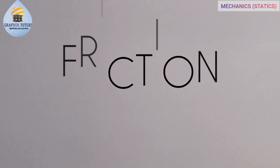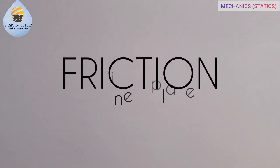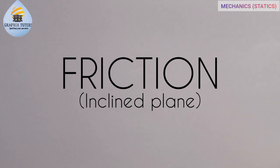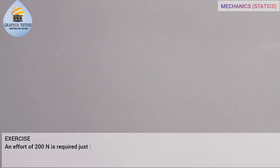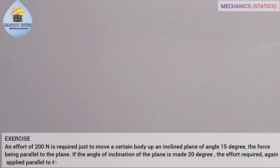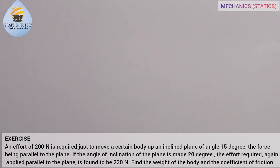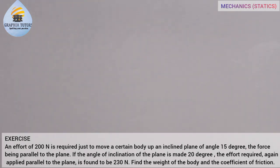Hello everyone, my name is Graphics. In this video we want to solve a problem involving friction on an inclined plane. The question goes like this: an effort of 200 Newton is required just to move a certain body up an inclined plane of angle 15 degrees, the force acting parallel to the plane. If the angle of inclination is made 20 degrees, the effort required, again applied parallel to the plane, is found to be 230 Newton. Find the weight of the body and the coefficient of friction.